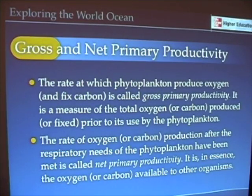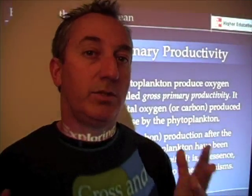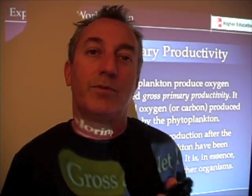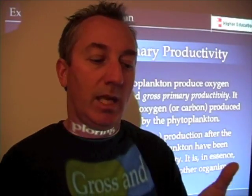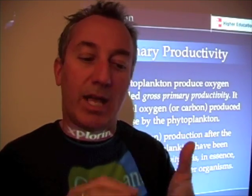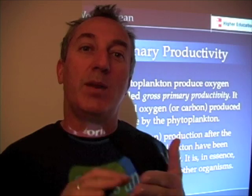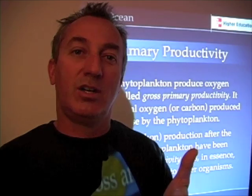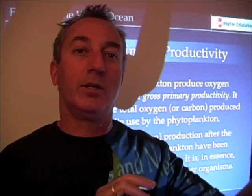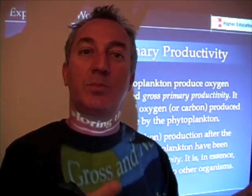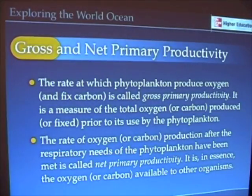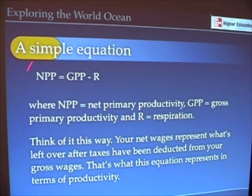The amount left over after the phytoplankton have used it is called net primary productivity. You've heard of the terms gross and net before if you've ever had a job. If you work and receive a paycheck, the number you're most concerned about — how much money am I putting in the bank — is called your net wages. That's the amount of money left over once taxes are subtracted from your gross wages. So gross primary productivity, minus the taxes — which is respiration — leaves us with net primary productivity. NPP equals gross primary productivity minus respiration.